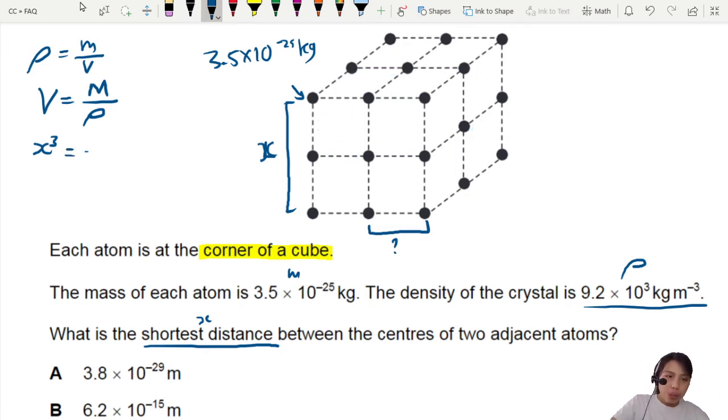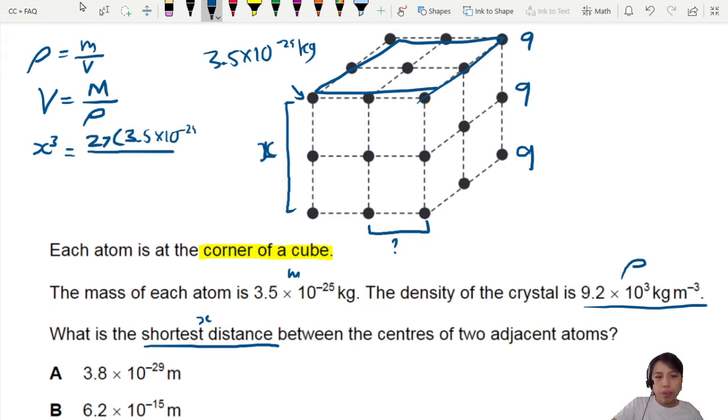So the mass, how are we going to do the mass? How many atoms are there? You kind of have to count. In each layer there are 9. So you see this top layer, there are 9. The next layer got 9, the next layer got 9. There should be 27 of them. So 27 times 3.5 times 10 negative 25 kg divided by density 9.2 times 10 to the 3 kg per meter cube.